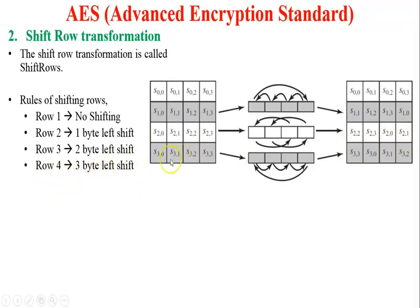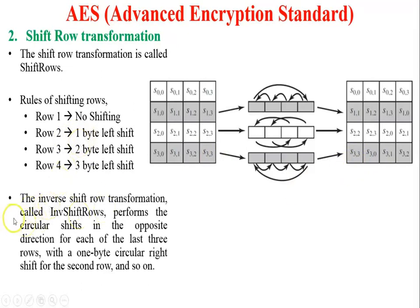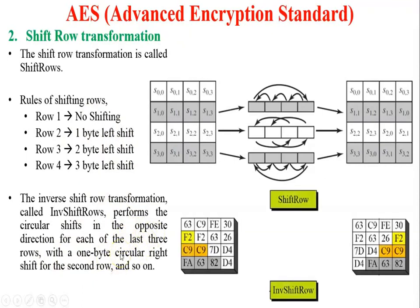The inverse S-box is used during the decryption process. For example, where we converted EA to 87 in the forward process, using the inverse S-box we convert 87 back to EA. The leftmost bits give the row (8) and the rightmost bits give the column (7) in the inverse S-box, and they intersect at EA.